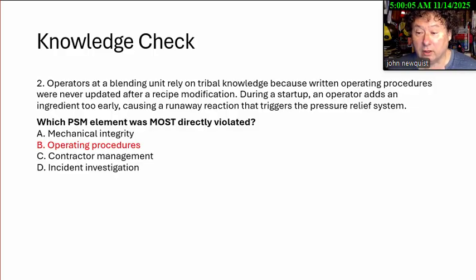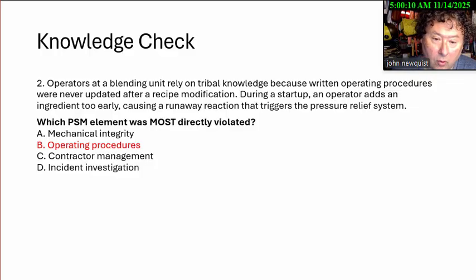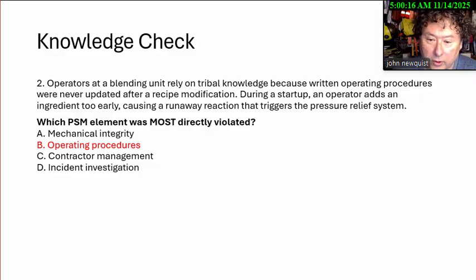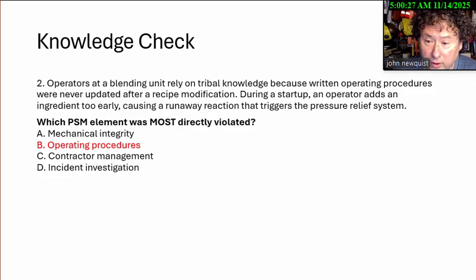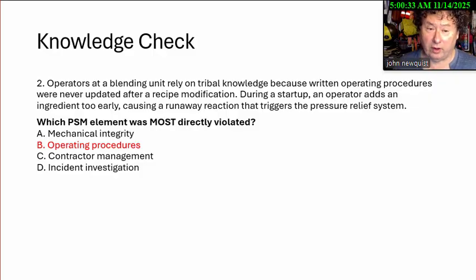This could be a tricky one, but they're looking for operating procedures because they emphasize that in the scenario. Why did the pressure relief go? Because it got overpressured. Did the system have a method to prevent overfilling? No. That's the trouble when you add too many ingredients to a process. There were several explosions like a case in Belpre, Ohio, back around 1990, where the reaction was too fast and couldn't handle the increase in pressure.